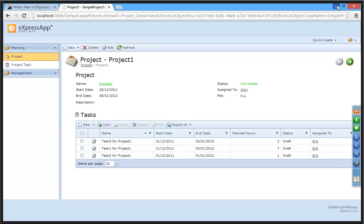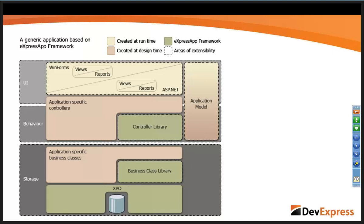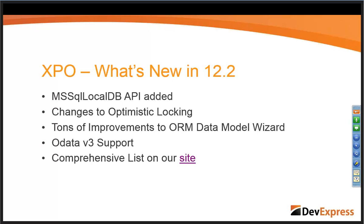So, what's new in 12.2? We're going to look into the new security system and how domain components have been integrated, the changes to ASP.NET templates, some new tooltip support, and the added model-first support for the Entity Framework. As well as a number of UI improvements to both the object designer and content on our website. For XPO, we've added a wrapper around the MS-SQL LocalDB APIs, made some changes and improvements to optimistic locking, lots of improvements to the ORM data model, and added support for OData version 3.